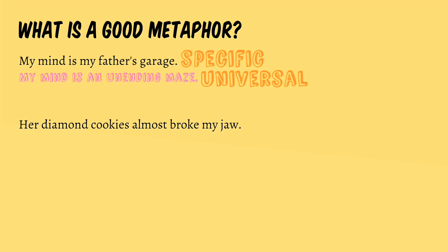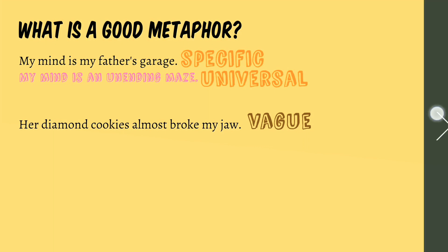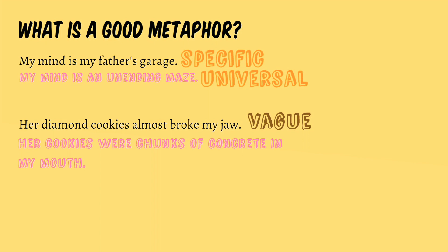'Her diamond cookies almost broke my jaw.' Here the cookies are compared to a diamond, but this is vague — we don't know if the cookies are bright, shaped like, or hard like a diamond. The major quality of a diamond is being shiny, not hard, so the comparison is confusing. Now consider: 'Her cookies were chunks of concrete in my mouth.' Here it is instantly clear they must have been too hard to chew, because concrete is known for its hardness. The tip is to make sure the comparison is not vague — the parallel drawn between two objects or ideas should be clear.